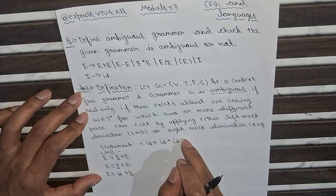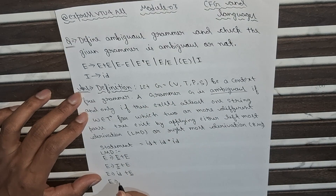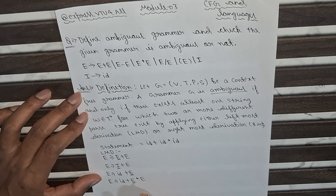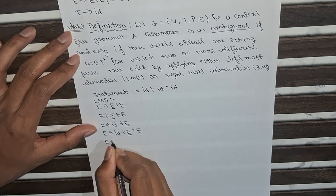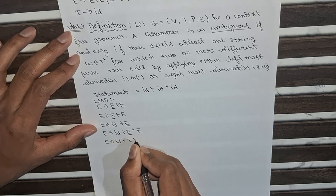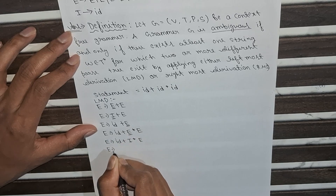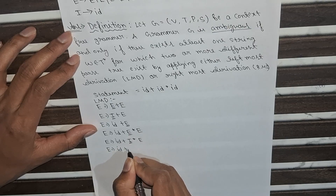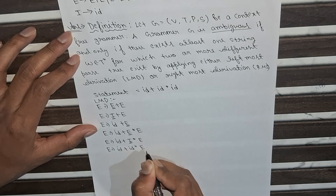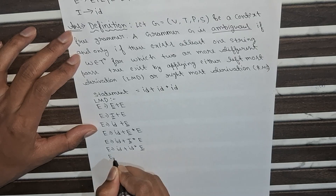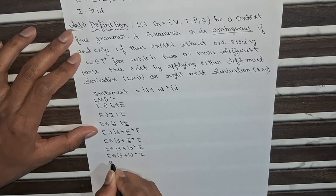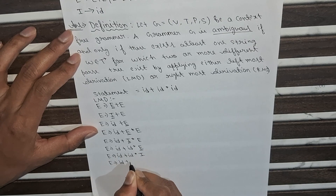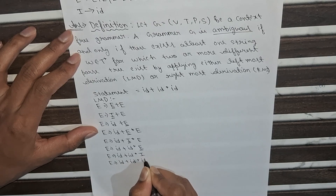Continuing, we replace E with I, giving ID + I * E. Since I → ID, we get ID + ID * E. Finally, replacing the last E with I and then I → ID, we get the final statement: ID + ID * ID.